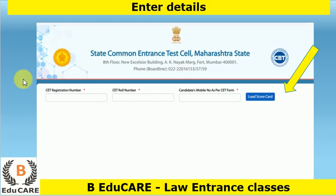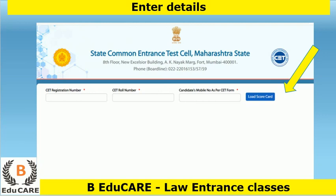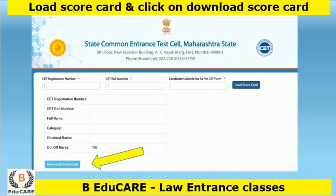Then you have to enter your CET registration number in this box, your CET roll number, and your mobile number which you registered on the CET form. Then you have to click on 'Load Scorecard'.